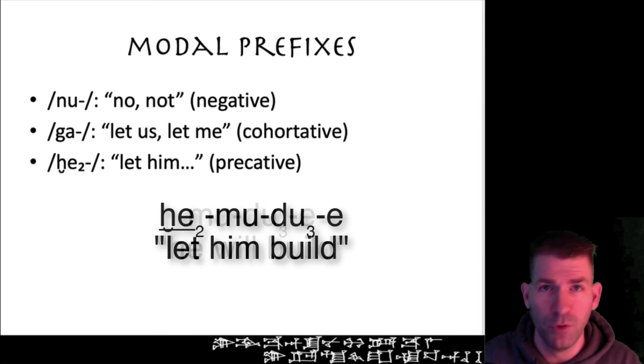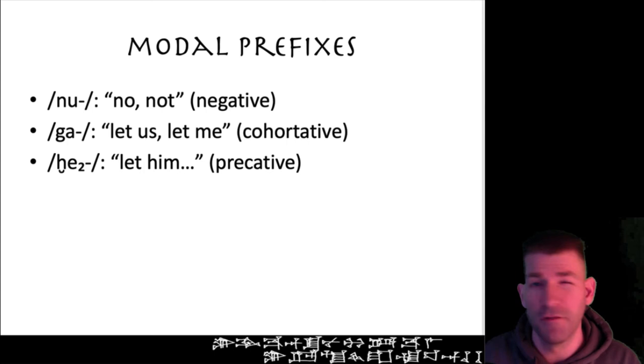As with the other modal prefixes, the form ḫe₂ can vary depending on the conjugation prefix that follows. If followed by ba, you will often see ḫa-ba. Likewise, if followed by mu, it will often be written ḫu-mu.